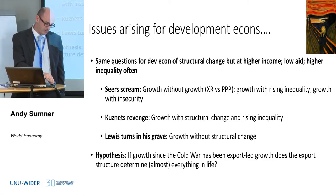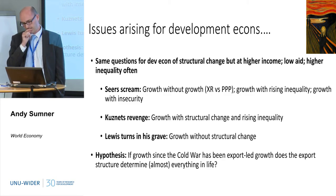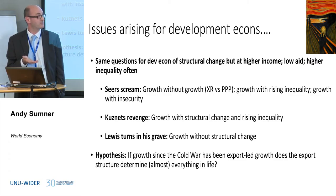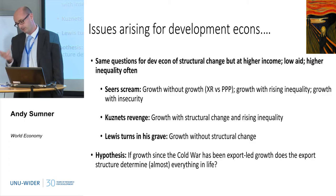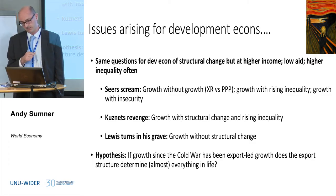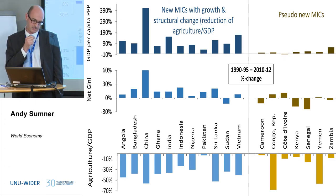A hypothesis to put on the table is that when I did a cluster analysis, if you look at a country's export structure, it can pretty much tell you about the country's poverty, its politics, and its public sector. On the left-hand side we have the new middle-income countries with growth and structural change: Angola, Bangladesh, China, Ghana, India, Indonesia, Nigeria, Pakistan, Sri Lanka, Sudan, Vietnam.